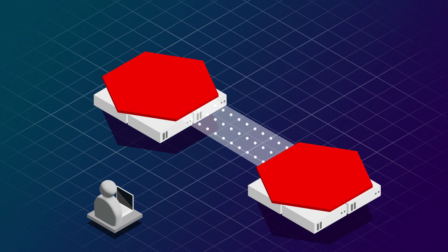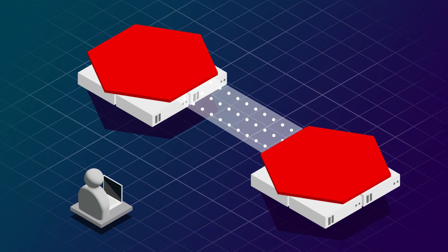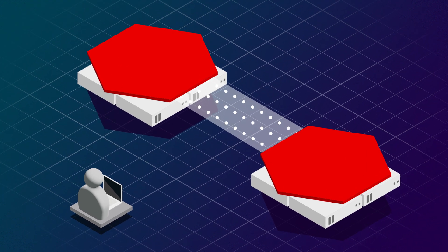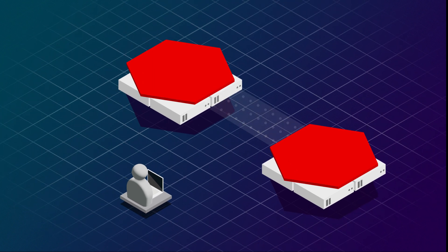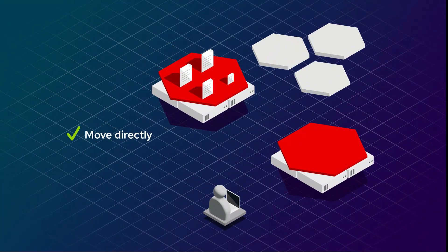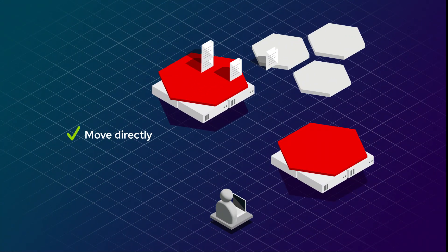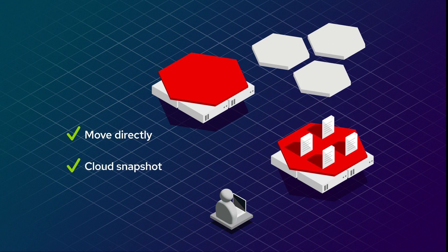With Red Hat's migration tools you can decide which applications to start with and which migration approach best fits each application. You can move persistent volumes directly, copy them using cloud snapshot capabilities, or do a file system copy when snapshots are not available.